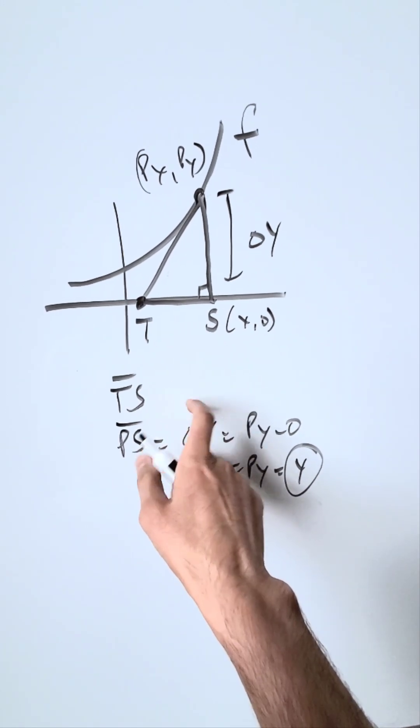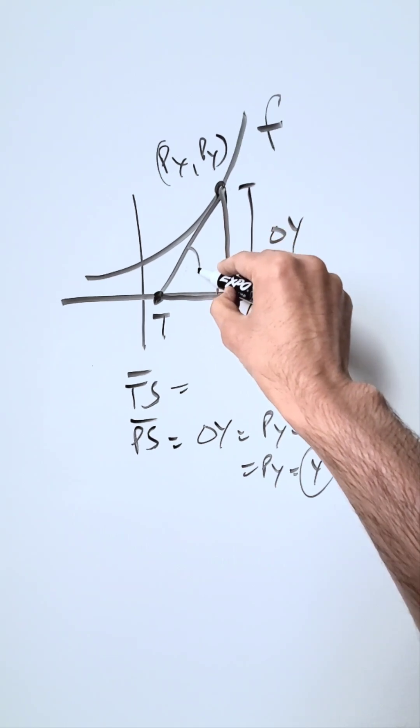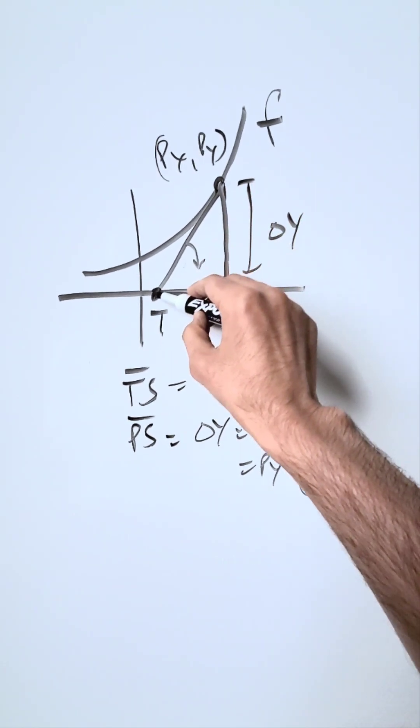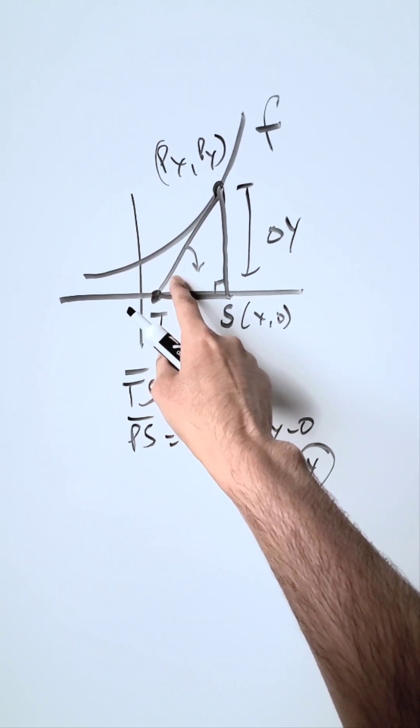What's my length of ts? Ts is nothing other than a subtangent. A subtangent is a projection of your tangent segment—that's what tp is, a tangent segment—onto your x-axis by means of a particular angle between the two.